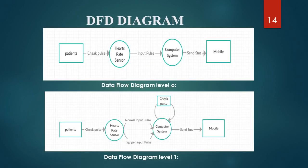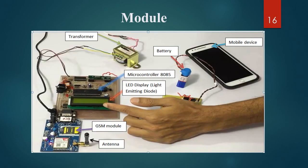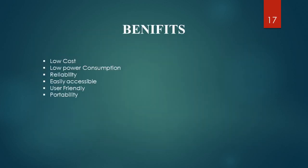The DFD diagram presents DFD level 0 and data flow diagram level 1. The module shows the transformer, battery, microcontroller 8085, LED display, GSM module, antenna, and mobile device. The next point is benefits. Our project benefits include low cost, low power consumption, reliability, easy accessibility, user-friendliness, and portability.